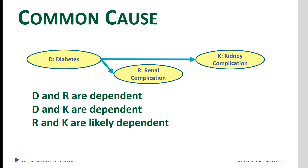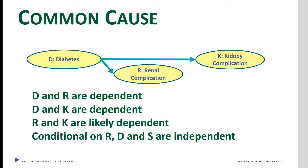If there is a correlation between kidney and renal complications, it is likely to be spurious — a product of the fact that both complications share the same common source. Conditional on diabetes, renal and kidney complications occur independently.